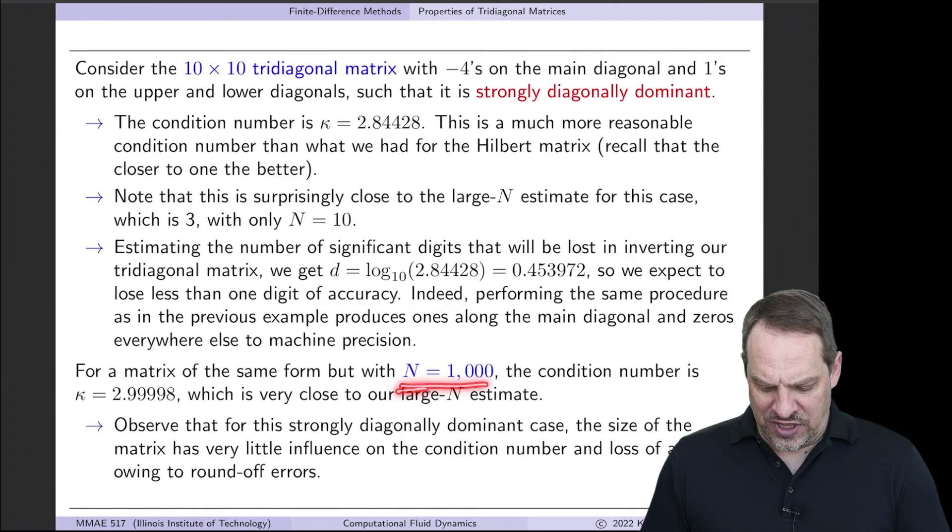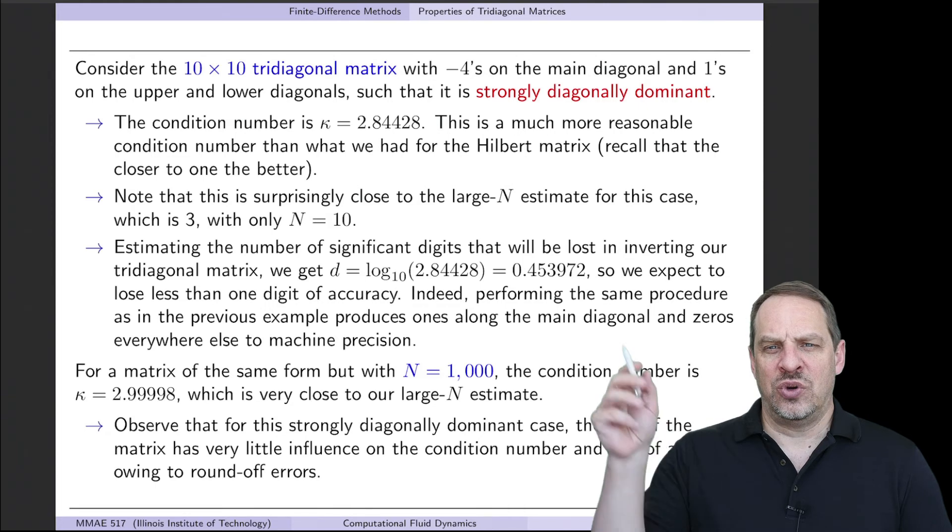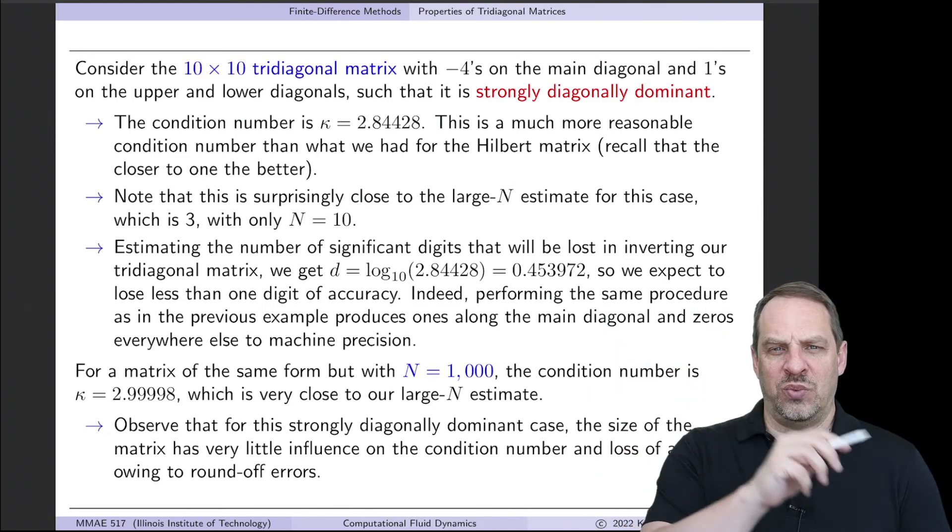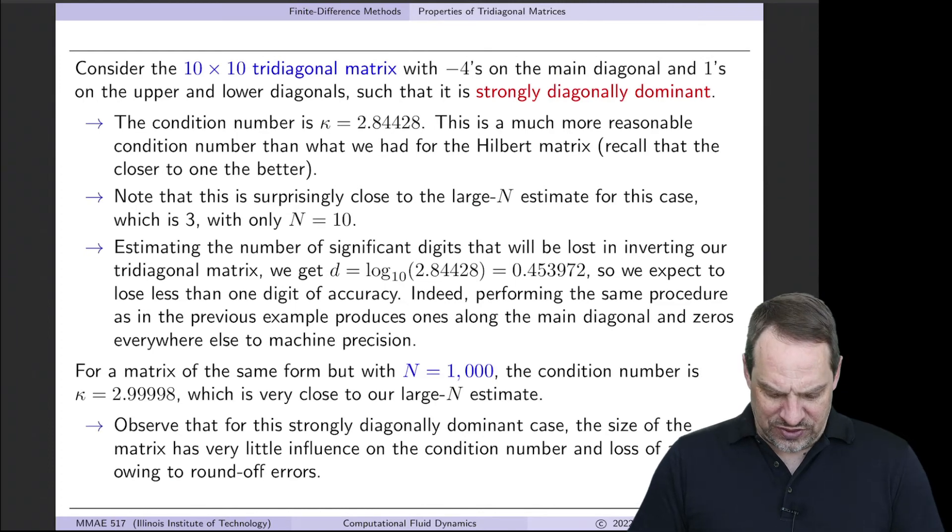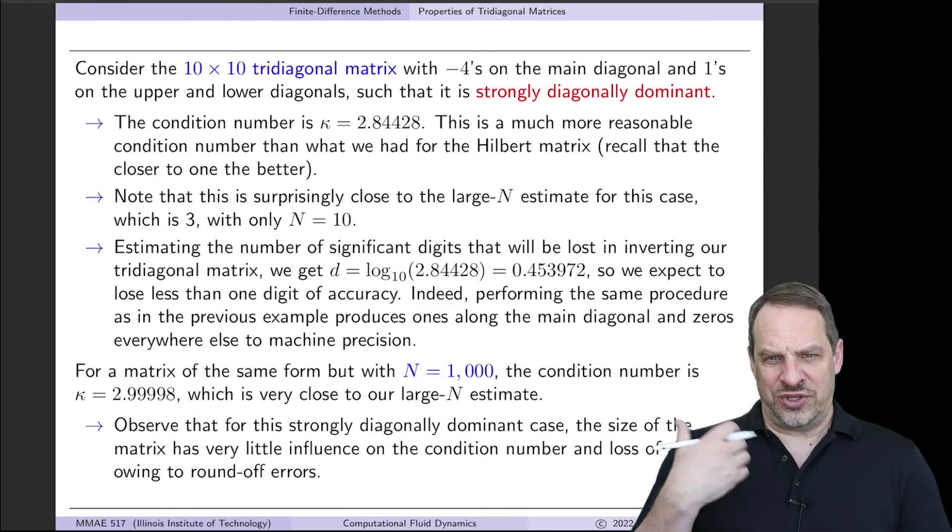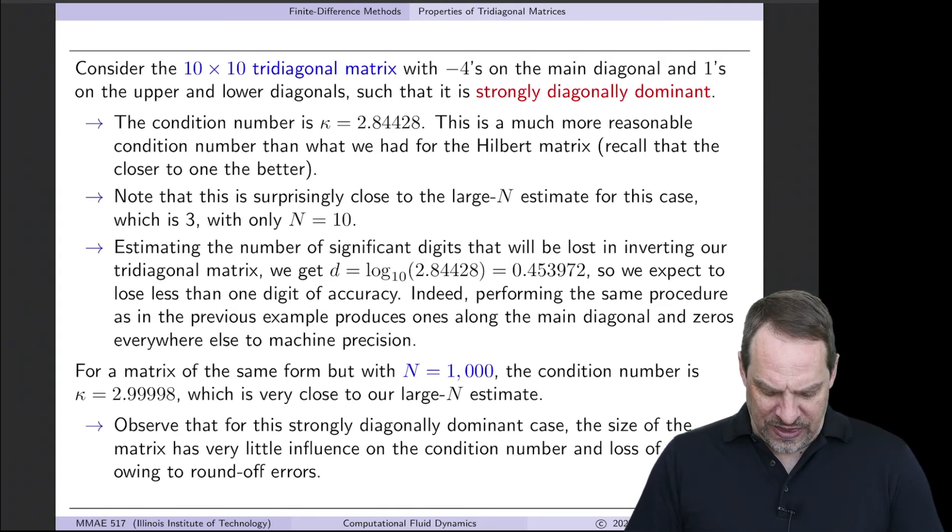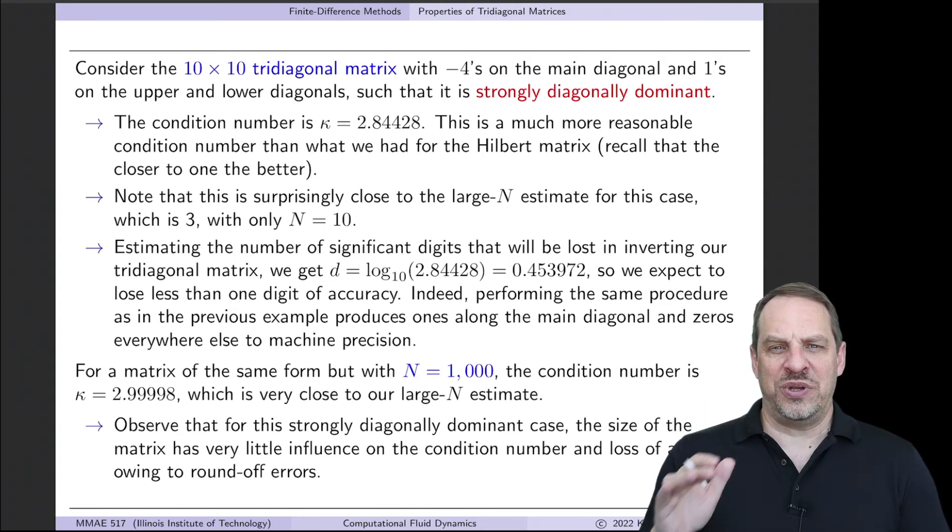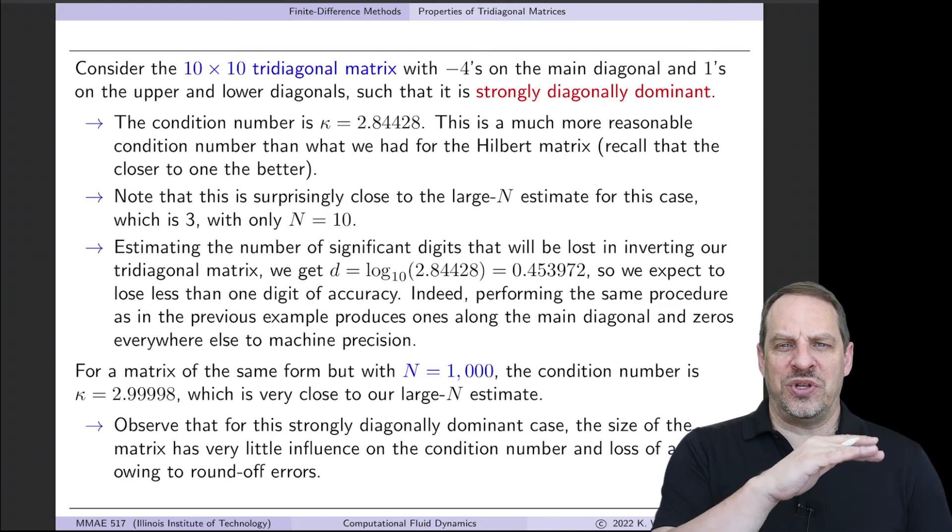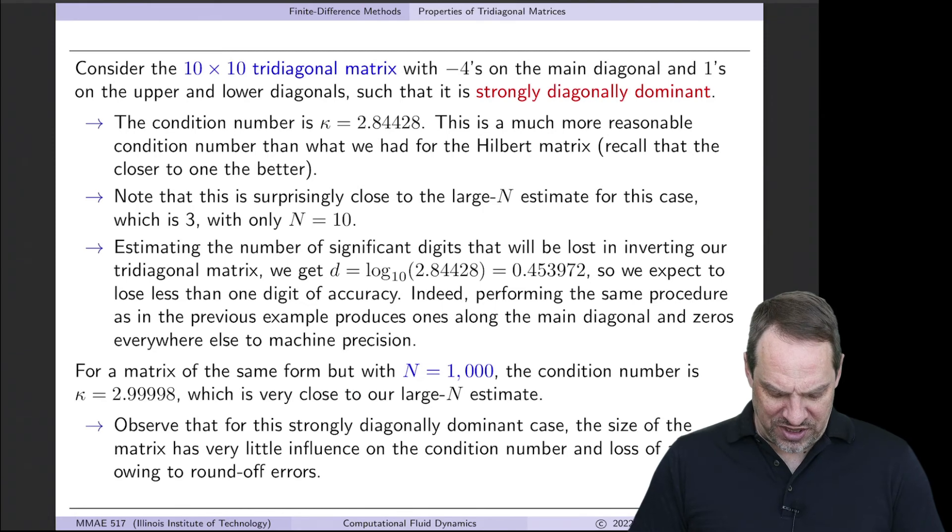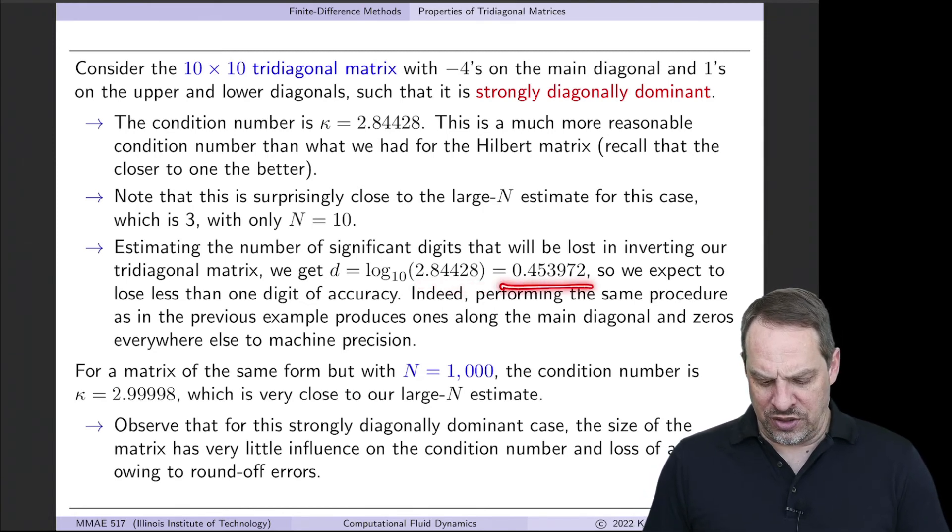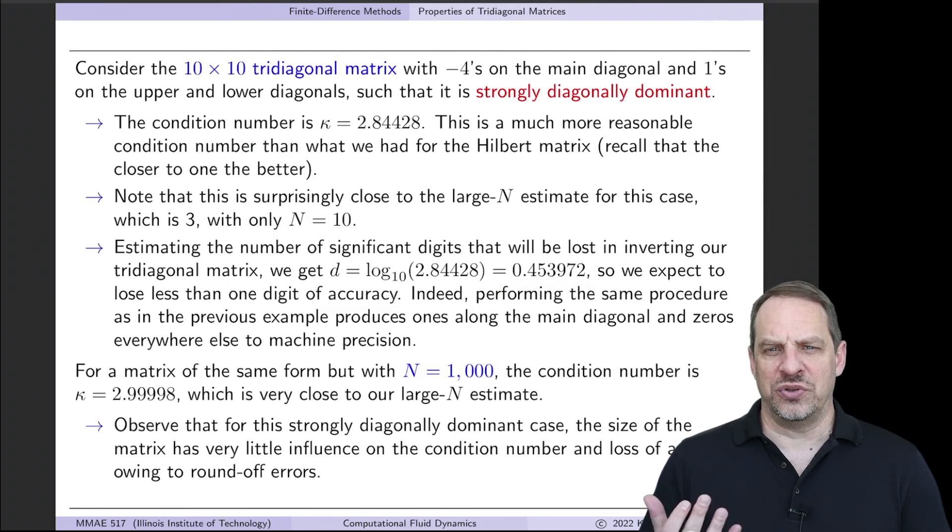Now to see the scaling of this, let's increase capital N to a thousand. So now we have a thousand by a thousand matrix with -4s down the main diagonal, 1s and 1s on the lower and upper diagonals. In that case, get the actual condition number, and it's 2.99998, which as you'd expect, and as you would hope is very close to the 3 estimate that we have for the large N case. So once again, no matter how big N is, no matter how big our matrix is, we will never get a condition number that's larger than 3 for this strongly diagonally dominant case. And if you put 2.99998 in here, you're still not going to get anything bigger than 1. So we're still only going to lose no more than one digit of accuracy when doing the inverse. And again, that is the case.